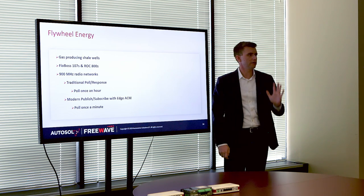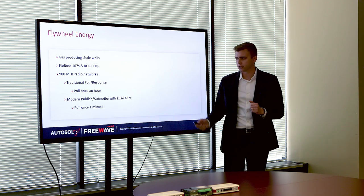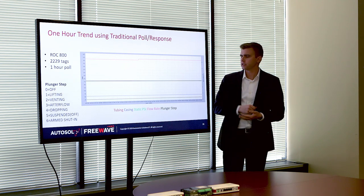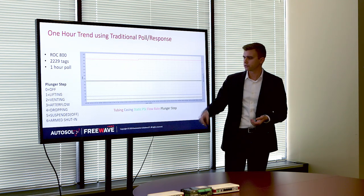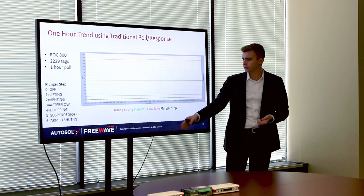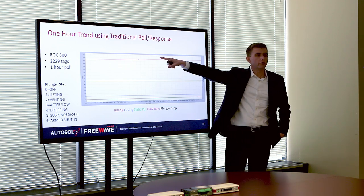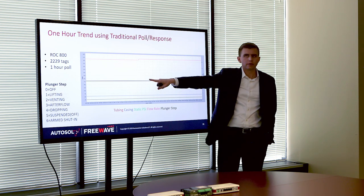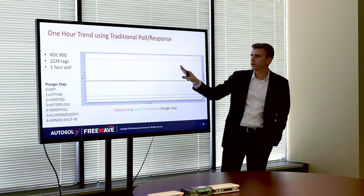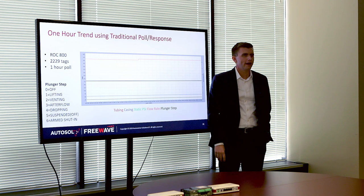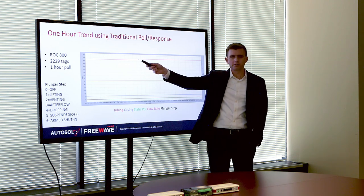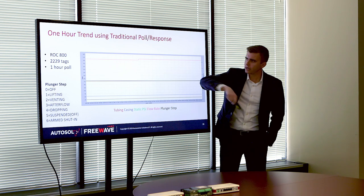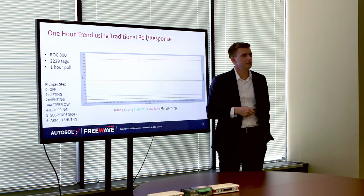Here is a trend from their Ignition system with five points: tubing, casing, static pressure, flow rate, and plunger step. Flow rate is the pink one on top, plunger step is the black one. This is a one-hour trend with their traditional polling — you can see there's one change because they only polled once in the hour. 2,229 tags from this one ROC 800.